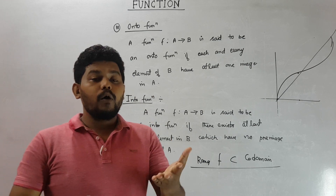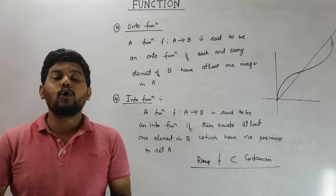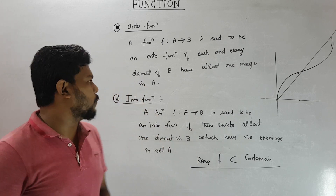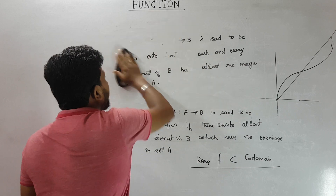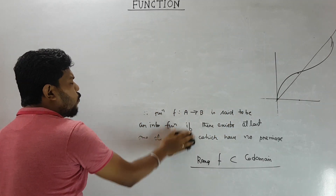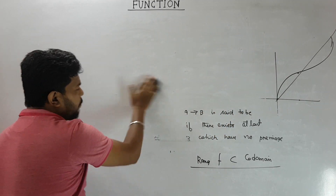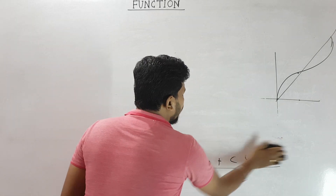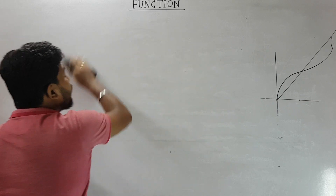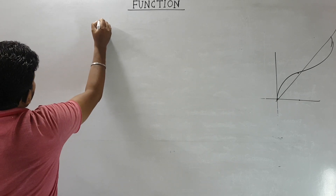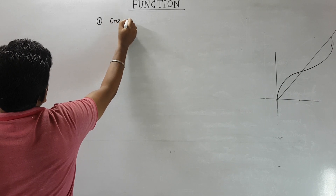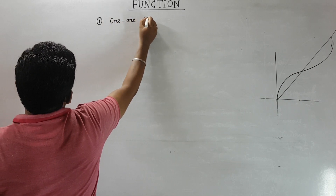Based on these four types — one-one, many-one, onto, and into — we can classify functions into four combined types: number one is one-one onto, number two is one-one into, number three is many-one onto, and number four is many-one into.